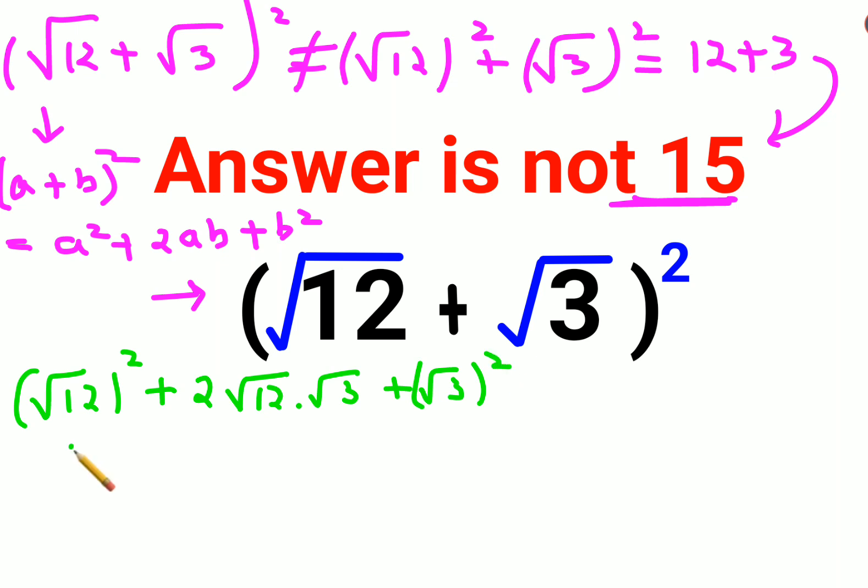(√12)² will be written as 12, plus 2√12·√3 can be clubbed together, so we have √(12·3) which equals √36, plus (√3)² which is just 3 since the root and square cancel.